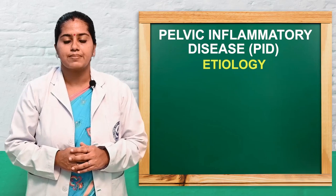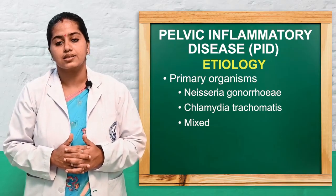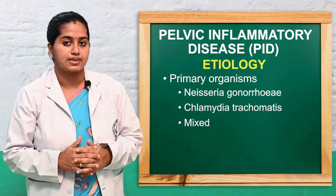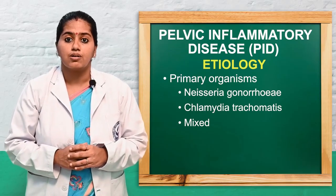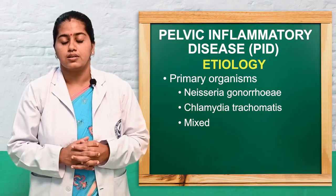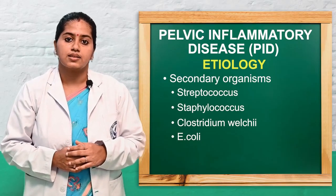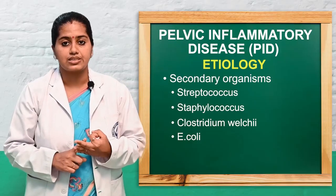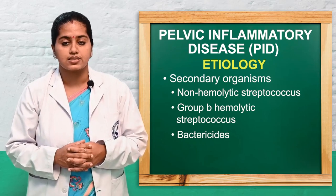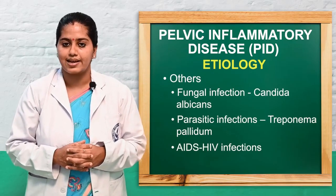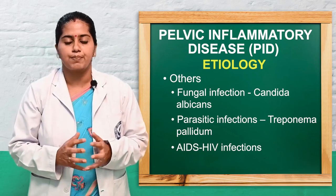The etiology involves organisms. Primary organisms include sexually transmitted organisms such as Neisseria gonorrhea, which is a common cause in about 80 percent of cases, and chlamydial infections, which are equally important, along with mixed infections. Secondary organisms include aerobic and anaerobic, gram-positive organisms such as Streptococcus, Staphylococcus, Clostridium welchii, E. coli, non-hemolytic Streptococcus, group B hemolytic Streptococcus, and Bacteroides infections. Other infections include fungal infection, Candida albicans, parasitic Treponema pallidum, and HIV infections, as well as other sexually transmitted infections.